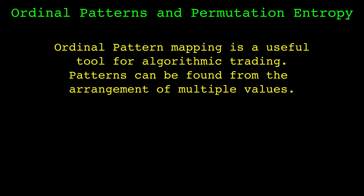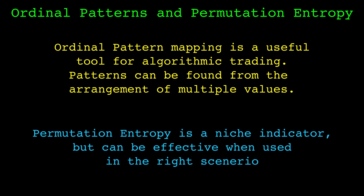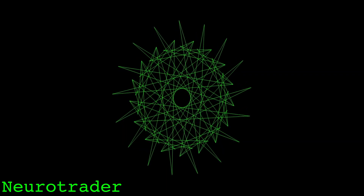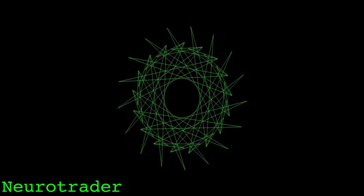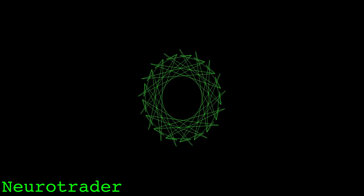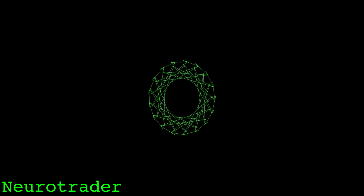In this video I showed ordinal patterns and permutation entropy. I will be making some videos in the future that use ordinal patterns to build interesting trading strategies. Permutation entropy is a rather niche indicator, but it is a traditional use case of ordinal patterns, so I felt it should be mentioned. The full code for this video is available on GitHub and is linked in the description. Thank you for watching.